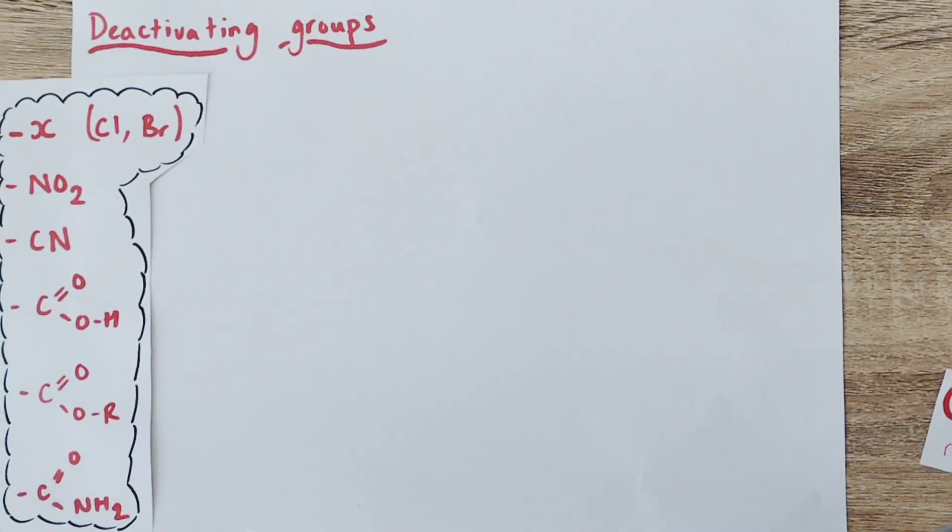So we've seen what activating groups can do, now we're going to consider what deactivating groups do to reduce the reactivity of benzene rings to EAS reactions. Here I've got a list of some common deactivating groups you might come across, and the common thread or theme that is linking them all together is that they all possess electronegative atoms, which will be doing a very different job to the positive resonance or the positive hyperconjugation of our activating groups.